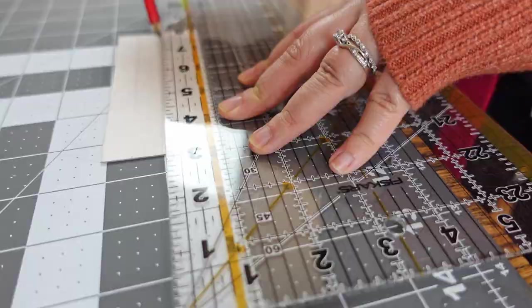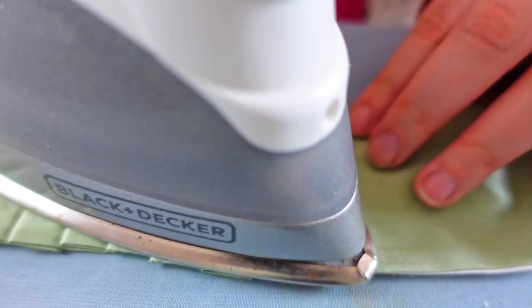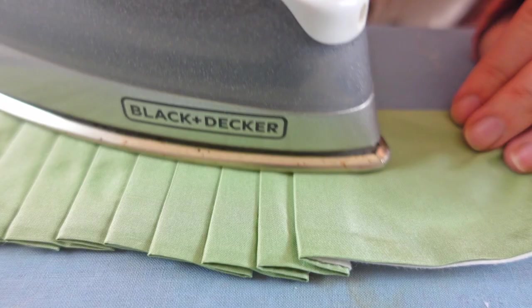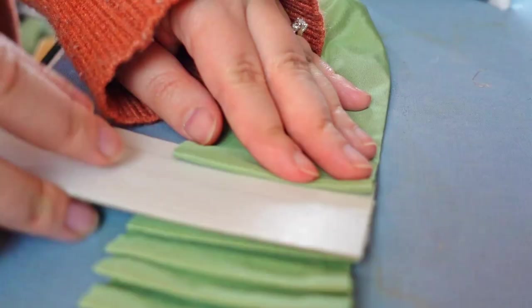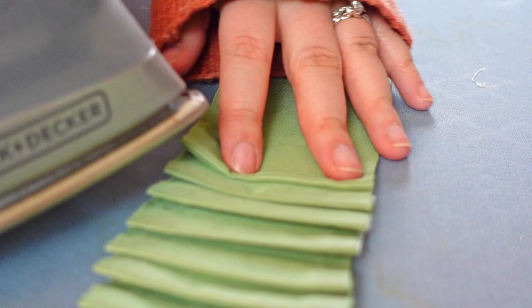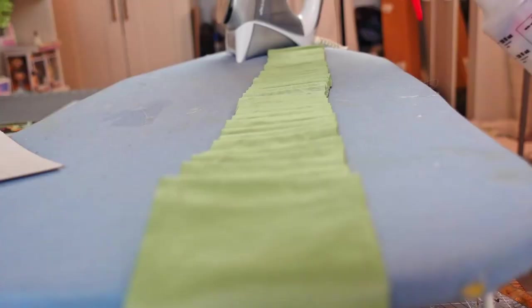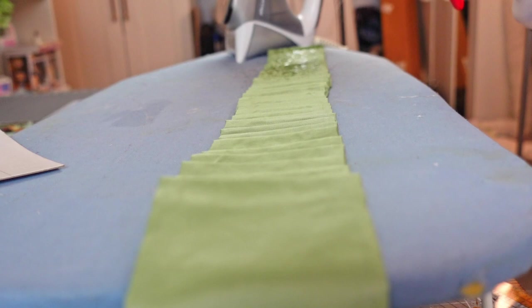I marked how deep I want the pleats to be on a piece of cardstock and I used it as a guide to press the pleats into place. Once all the pleats were pressed, I sprayed them with a solution that was one part white vinegar, one part water. I then pressed them again to set them. I promise the vinegar scent goes away.